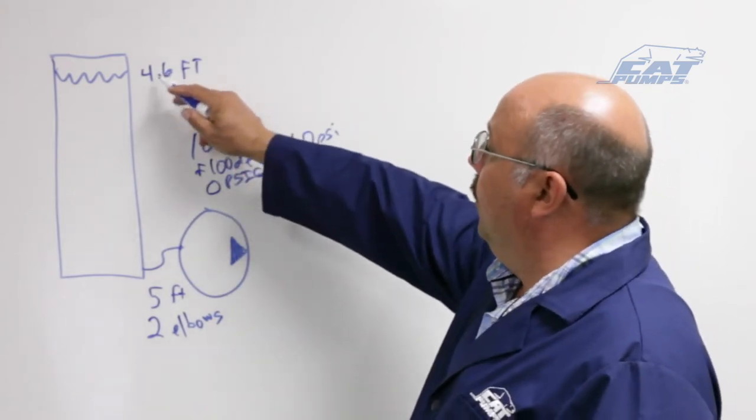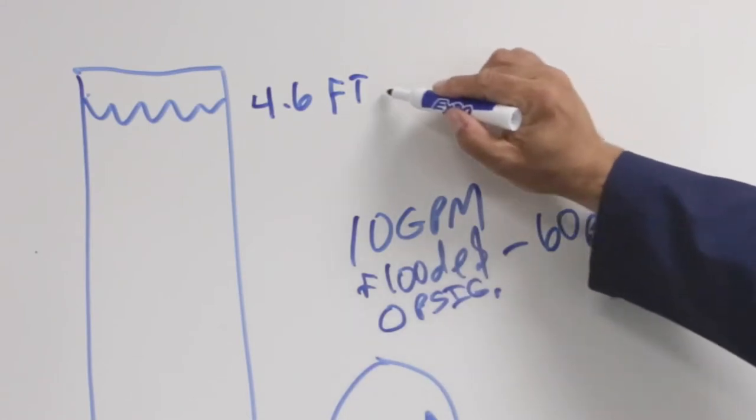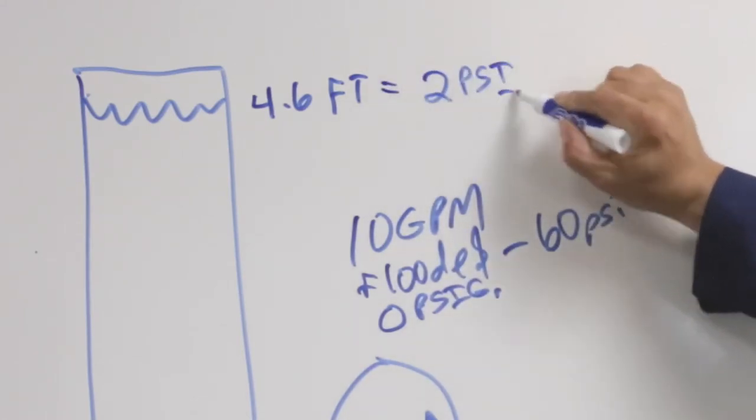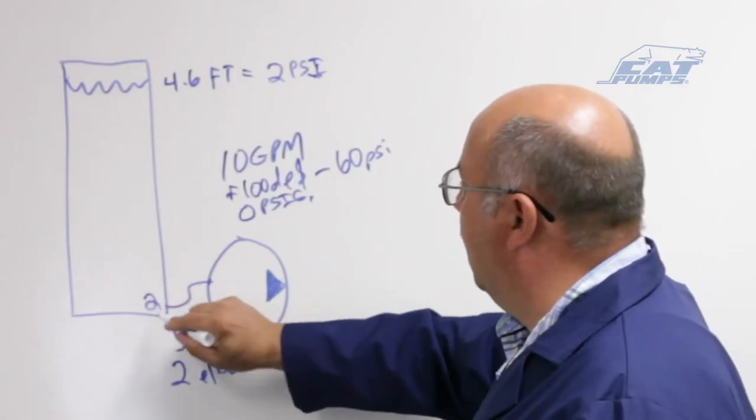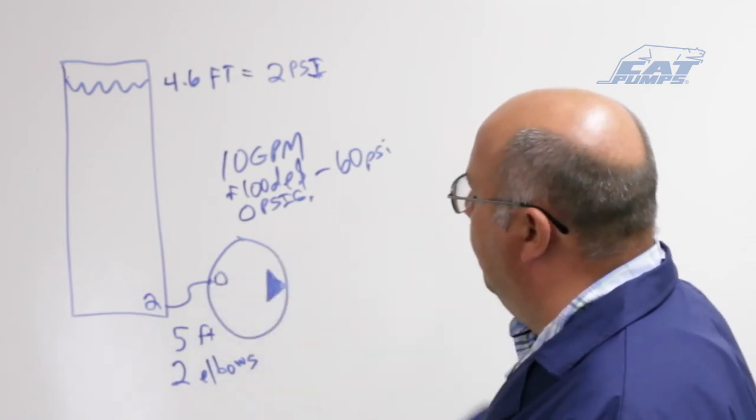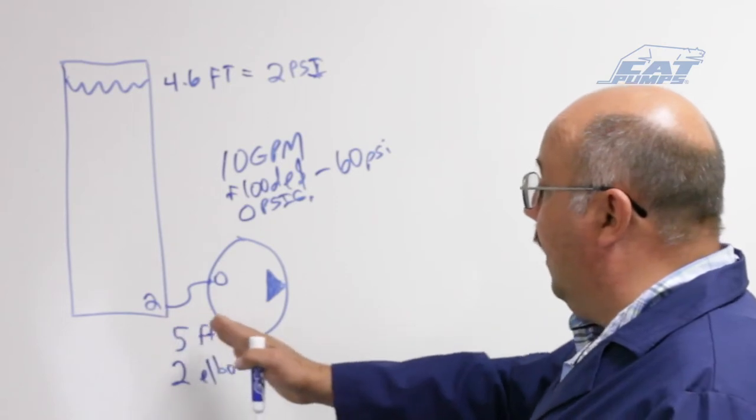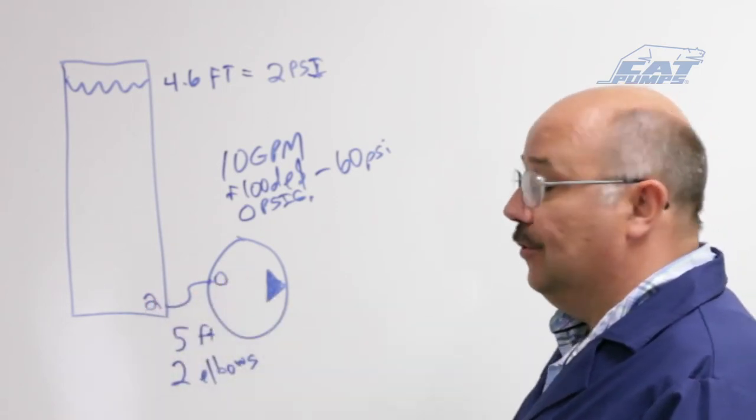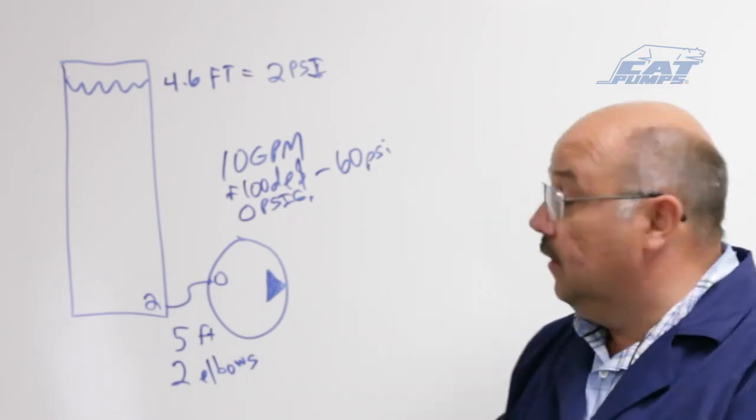Well, you might think we have 4.6 feet of water. That's a lot of water. But in reality, that equates to 2 PSI. So here at the bottom of the tank, we have 2 PSI. And the lowest we can go is zero. So we have to find a line size that's 5 feet long with 2 elbows that drops less than 2 PSI. So let's just start doing that calculation.